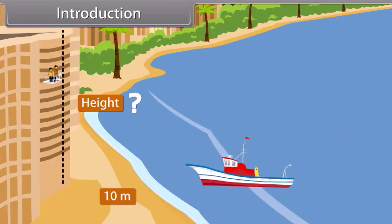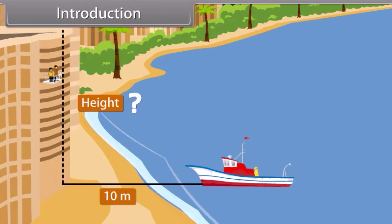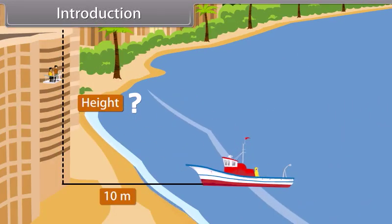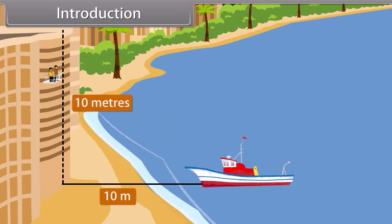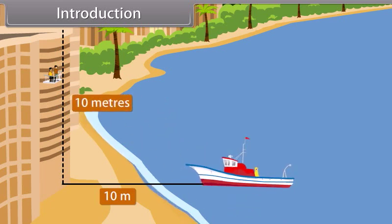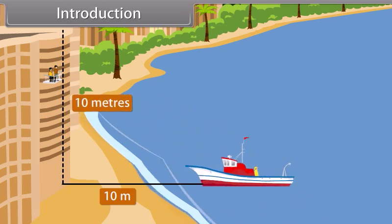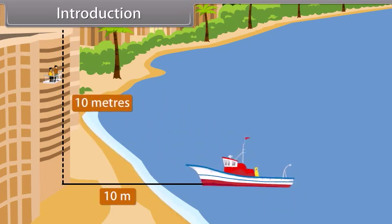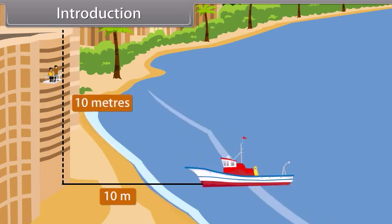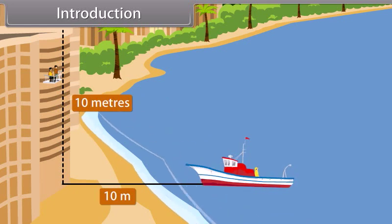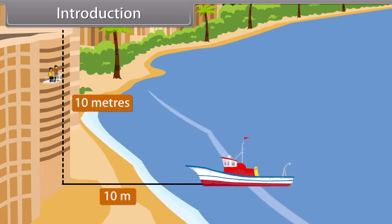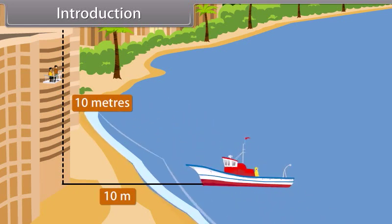The answer to your question, that is, the height of the building is 10 meters. Anvesha used trigonometry to answer Vedika's question. In this lesson, you will learn about the relationship between angles and sides of a triangle.